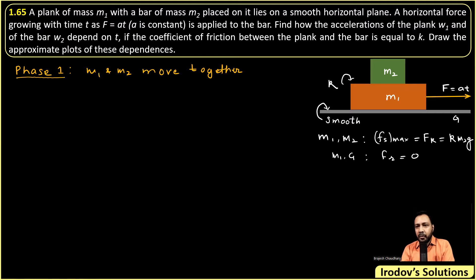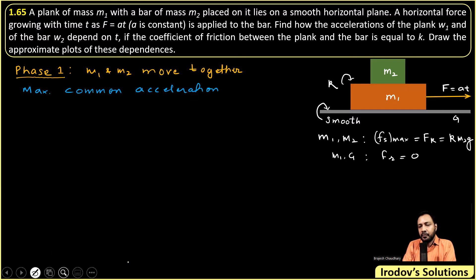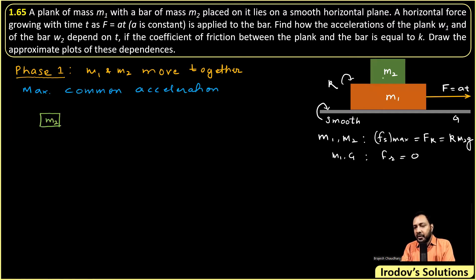As F is growing, there will be more and more requirement of friction between m1 and m2, but the friction is limited, so there will be an upper limit — the maximum common acceleration. To find the maximum common acceleration, I'll draw the FBD of m2, because on m2 there is only one force acting: the friction between m1 and m2, pulling m2 in the direction of motion. When they are about to slip, the friction reaches its limiting value km2g.